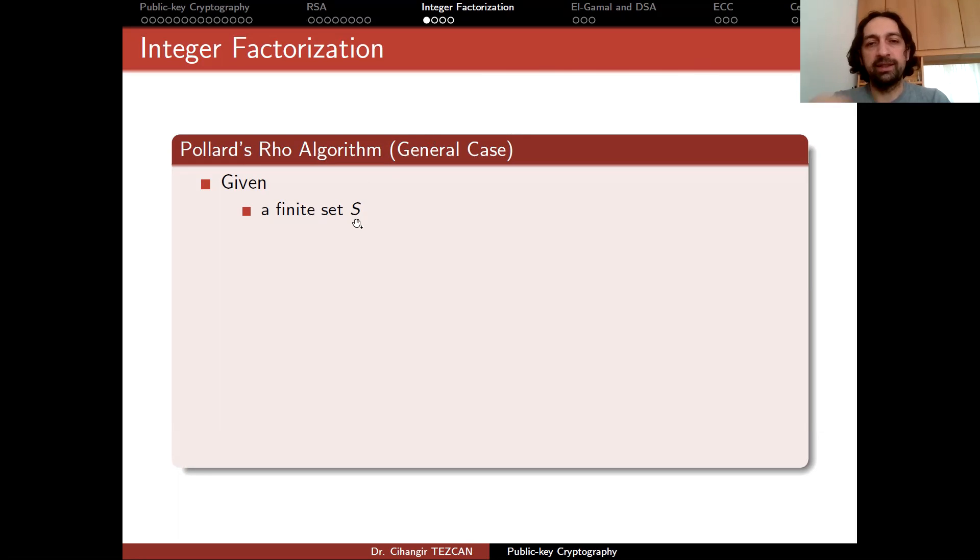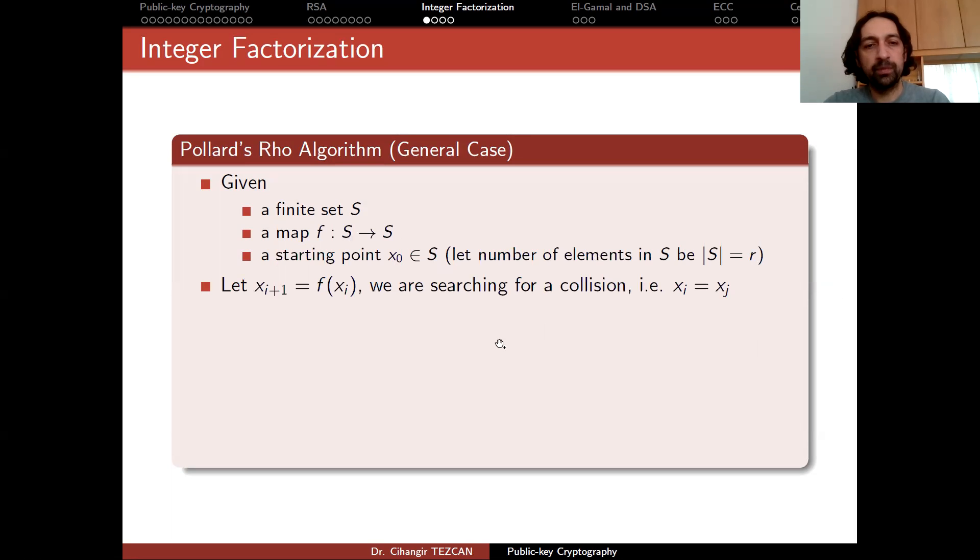So let's say that we are given a finite set S and we have a map F, which maps the elements in S to itself. So we choose a starting point x_0 in this set and let's say that this set S has r elements. And let's define x_{i+1} as the output of f(x_i). So our aim is to find the collision. So we are searching for a collision where x_i equals to x_j. Of course, i should be different than j. So you can think this as a collision attack for a hash function. So assume that this F is a hash function. So you are trying to find two different values that are the same. So at some point x_i will be x_j.